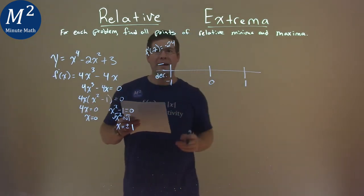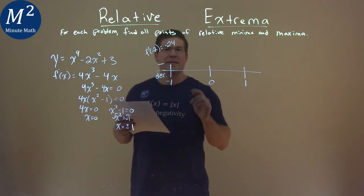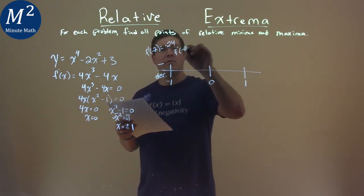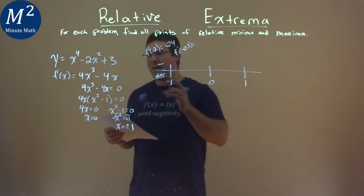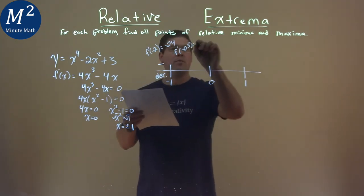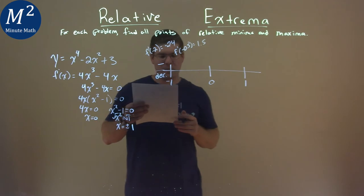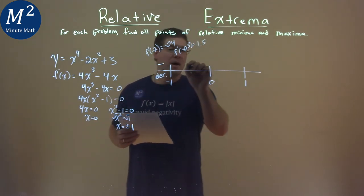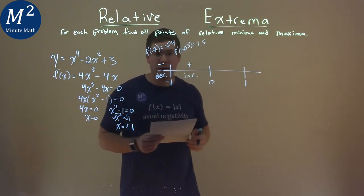Between negative 1 and 0, I picked negative 0.5, so f prime of negative 0.5, plug that into my derivative, and I got a 1.5. I just care that it's positive, and therefore we're increasing on that interval.